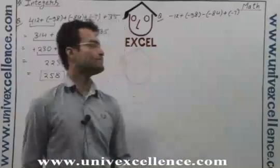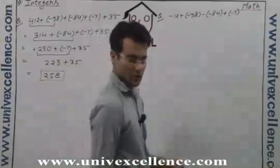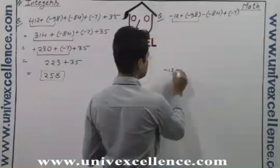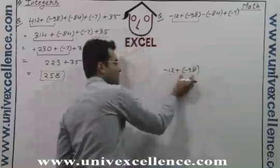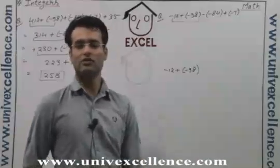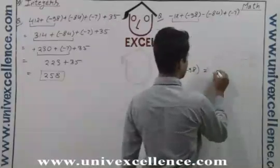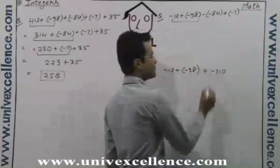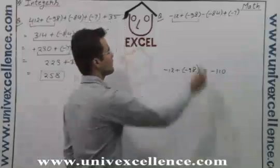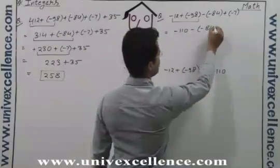Now minus 12 plus minus 98 minus minus 84 plus minus 7. Choose the first two — we have minus 12 and minus 98, same sign, it means there will be addition, and after the addition we get 110. Both are negative, so the sign will be negative — minus 110. So this is minus 110, and the other things remain the same.